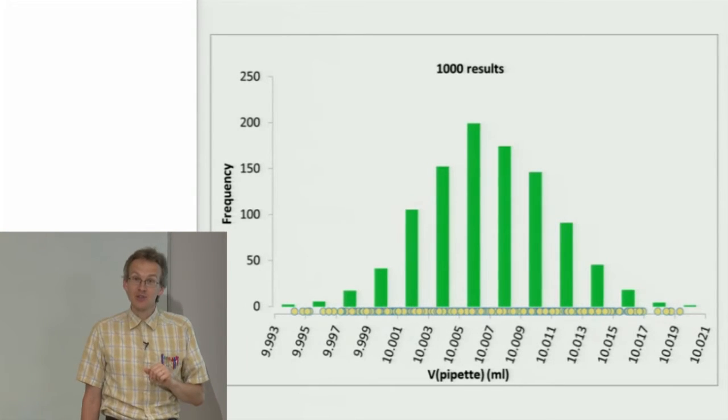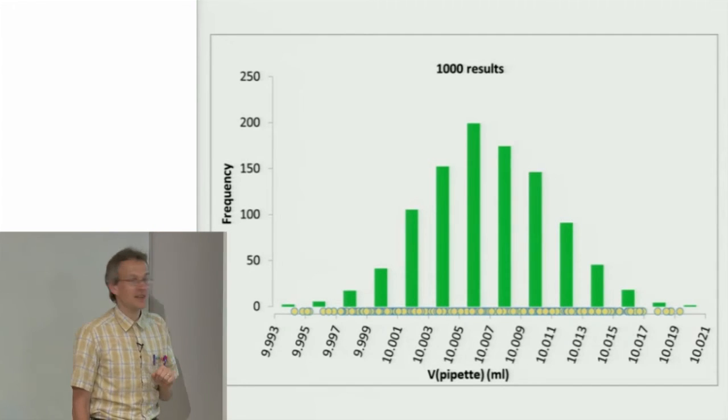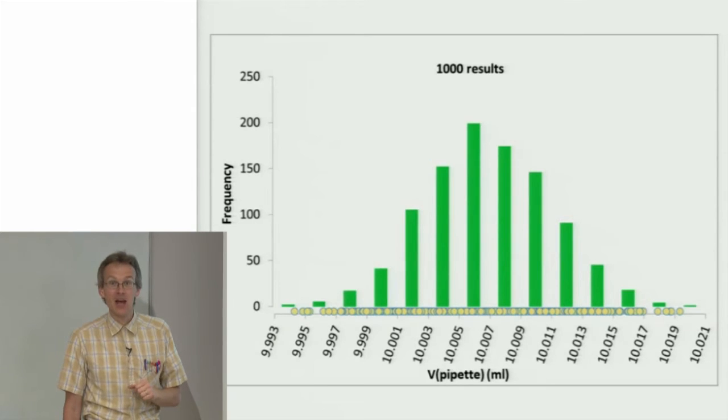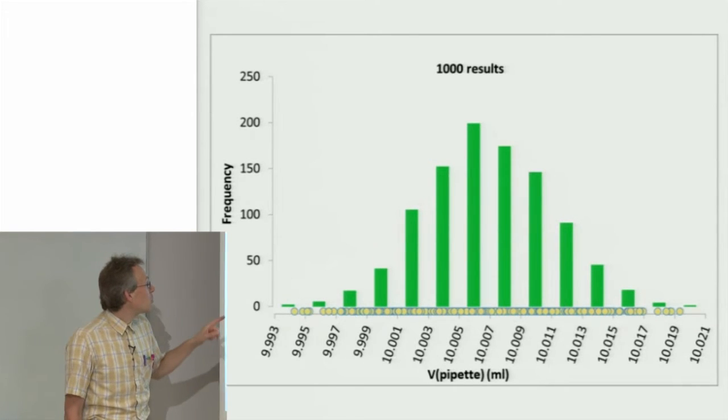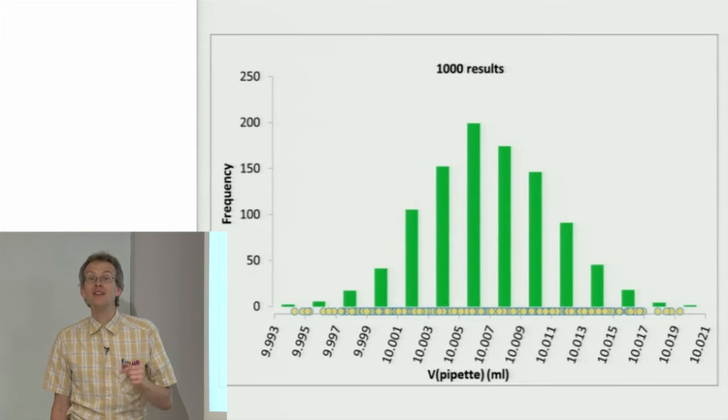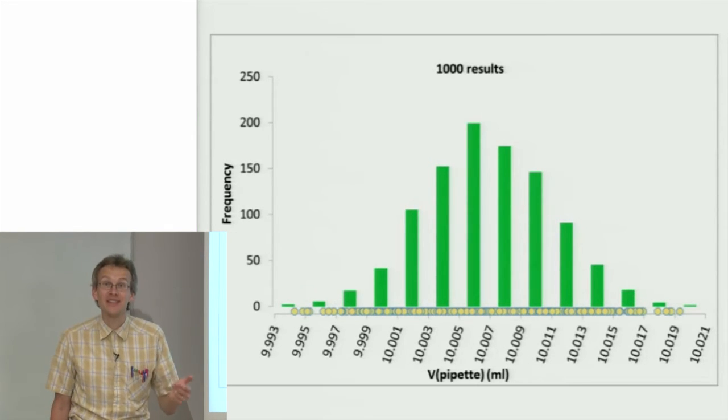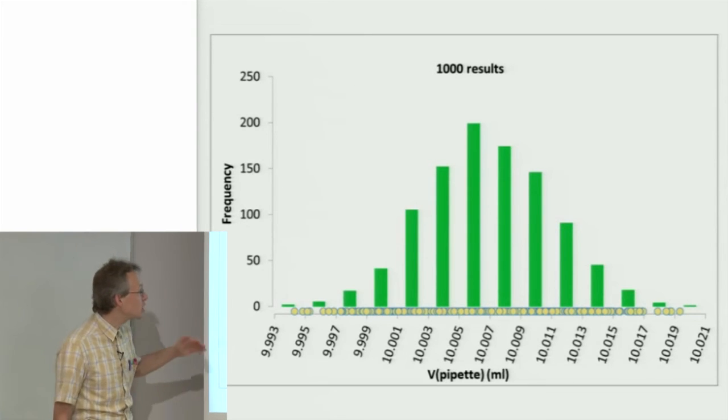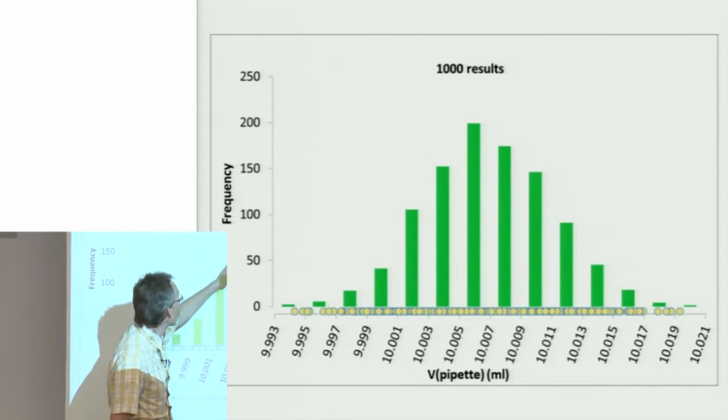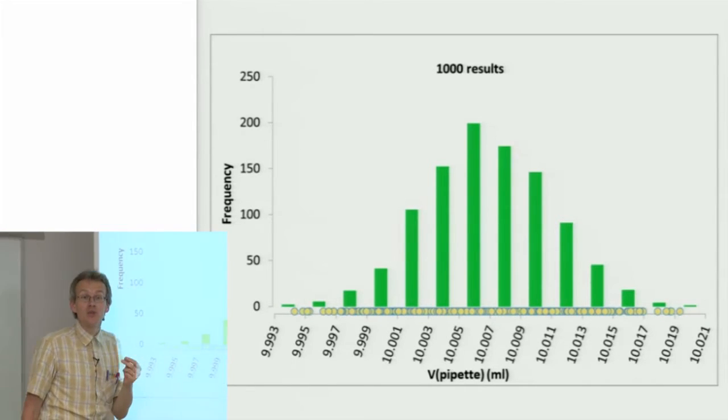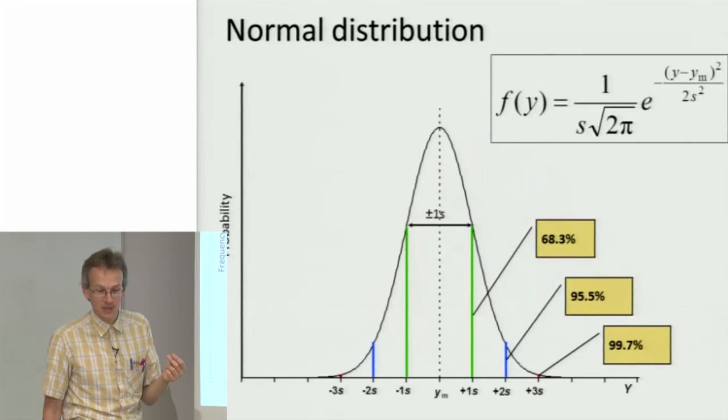It is not really easy to make 1,000 measurements, whatever the measurement is. But luckily, we do not need nearly as many measurements to get the important characteristics of the normal distribution. Usually we do not need to record this shape as such. We simply need to know some important characteristics or important parameters.